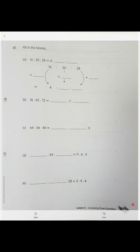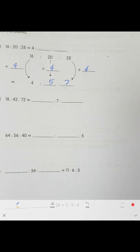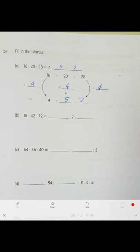Now we do the same thing with division. We have a ratio 16 to 20 to 28, and we need to find two missing numbers. To go from 16 to 4, we divide everything by 4: 20 ÷ 4 = 5, 28 ÷ 4 = 7. So the answer is 4 to 5 to 7.